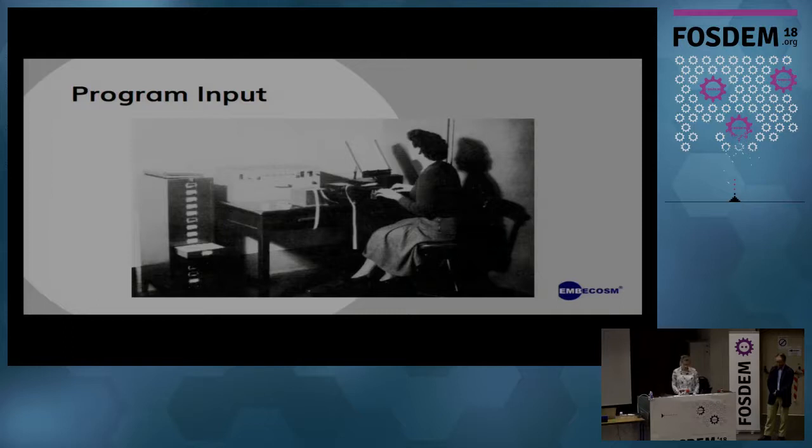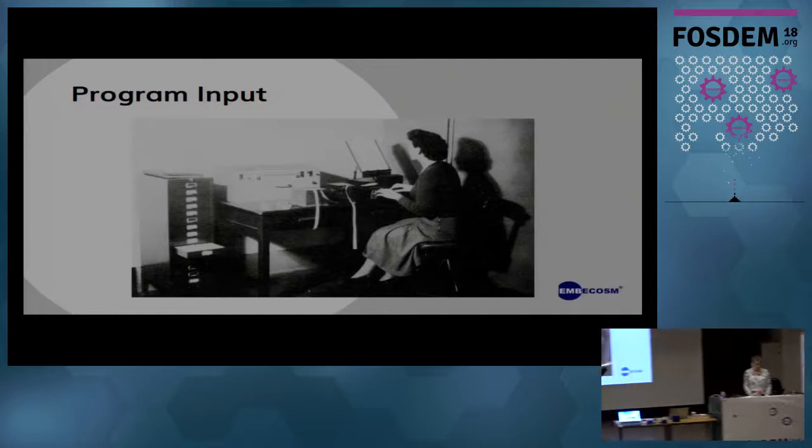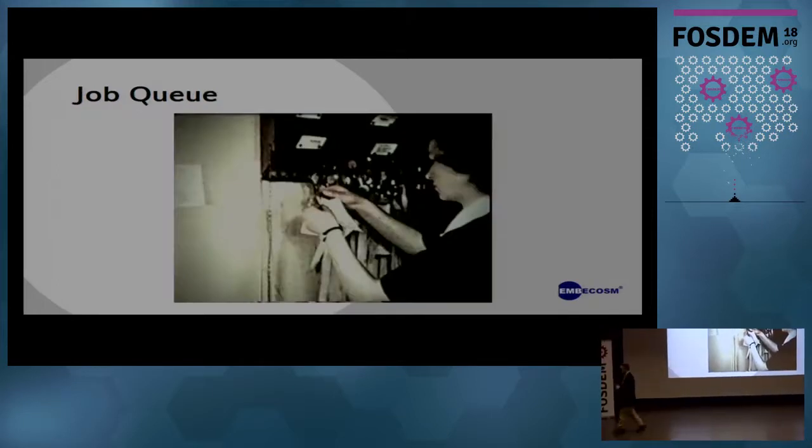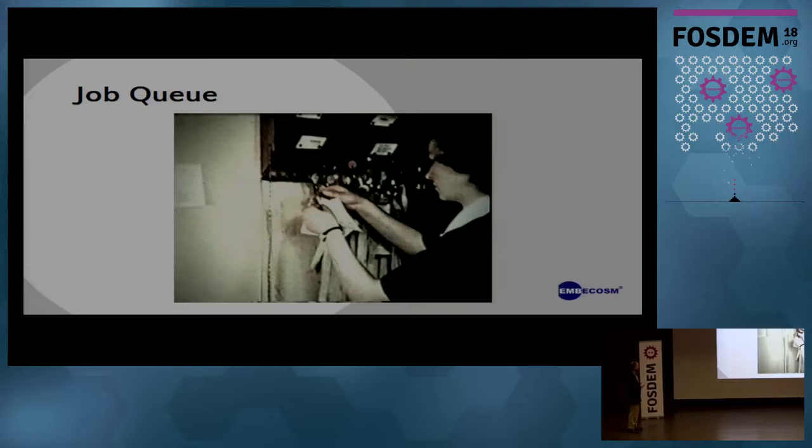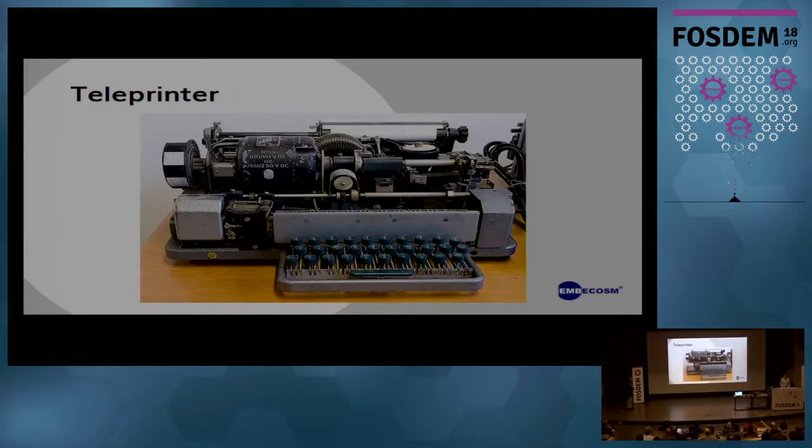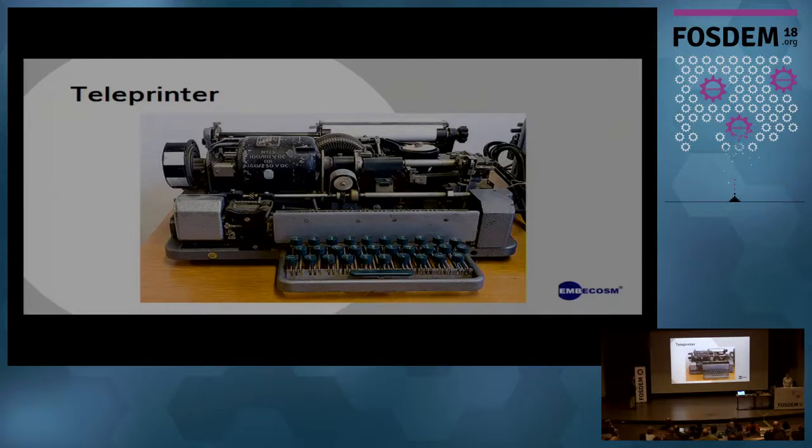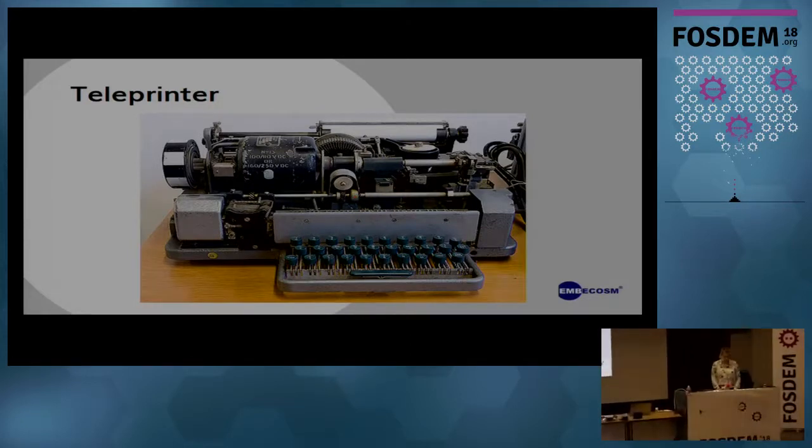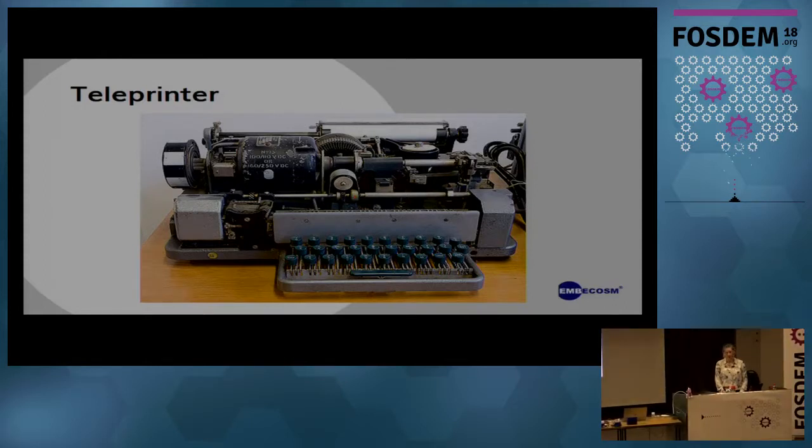EDSAC used punched paper tape to input programs. A programmer would provide a handwritten program to a specialist typist who converted it into EDSAC Baudot code and punched the five-hole wide tape. The programmer would then hang their tape on a rack ready to be run. If there were errors, a hand punch could make small corrections. For printed output, an electromechanical teleprinter was used. EDSAC could send the least significant five bits of the long word to an internal buffer, and when a new character was received, the previous character would be printed.